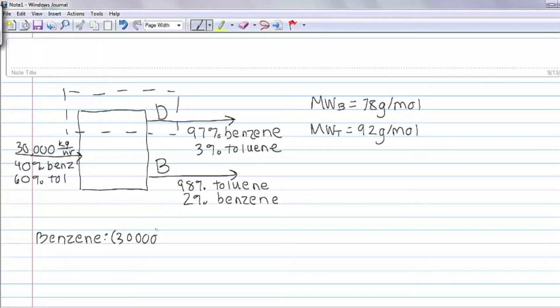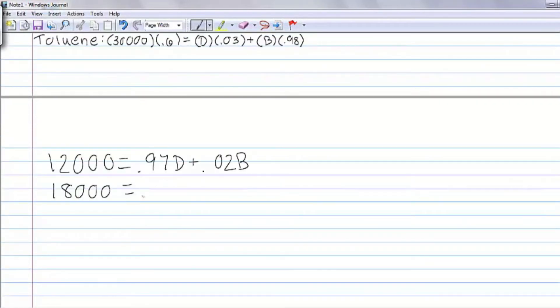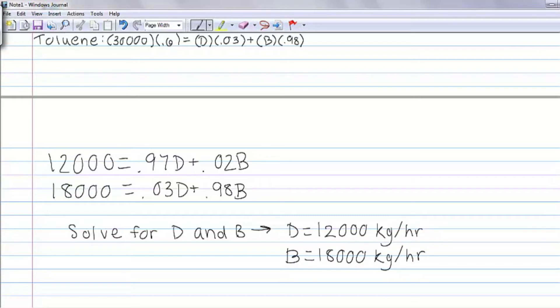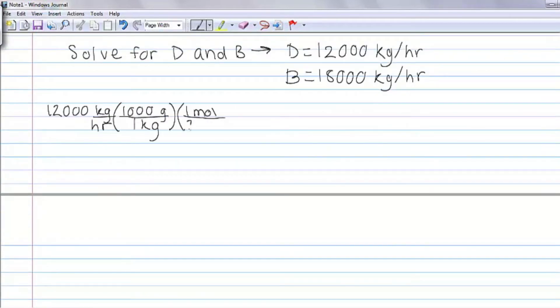Now we can set up the overall mass balances for benzene and toluene. The balances should be mass in to the system equals mass out. Simplifying these equations gives us two equations and two unknowns, so now we can solve for the overhead and bottoms products' mass flow rates. We can then convert these mass flow rates to molar flow rates using the molecular weights.